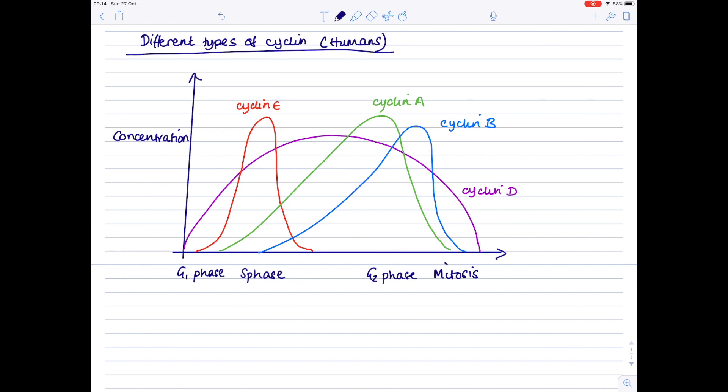This graph shows the four main types of cyclin found in human cells and how these cyclins rise and fall over the duration of the cell cycle. It's important to notice that these cyclins have to reach a threshold concentration in order for the cell to progress into the next stage.